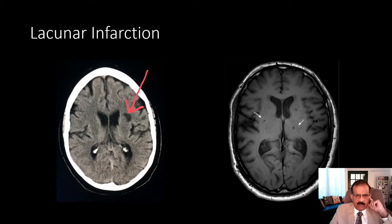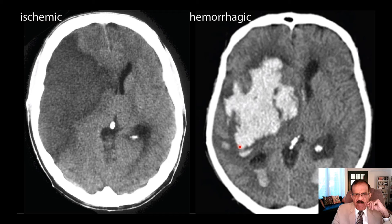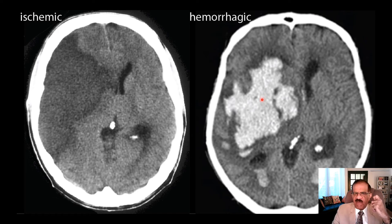Now, comparing infarction with hemorrhage: this big, very hyper-intense, irregular-shaped opacity within the brain is very different from infarction. Unlike infarction, which affects one entire territory of the middle cerebral artery, this one — although in the territory of the middle cerebral artery — is not affecting the entire territory. This is actually a hematoma where some branch of the middle cerebral artery has ruptured.